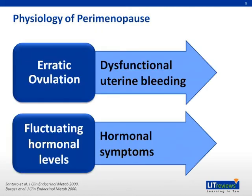The perimenopausal period encompasses many changes. Physiological changes include erratic ovulation and fluctuating estrogen and progesterone levels. These can result in dysfunctional uterine bleeding and hormonal symptoms.